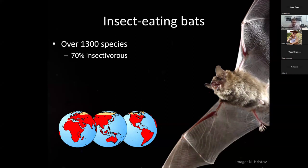Let's talk about bats as predators. There are now over 1,400 species of bats, and an estimated around 70% or so are purely insect eaters — so close to probably 1,000 species of bats on Earth that are pure insect eaters. The distribution of bats is pretty much all around the world. You have to go to some very unique locations to find places where there are no bats, such as the Arctic, the Antarctic, and certain very remote islands — but even many remote islands do have bats.